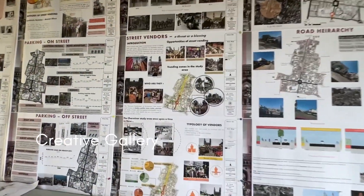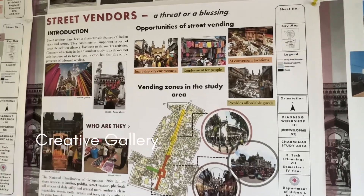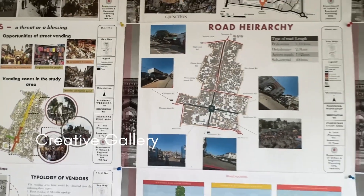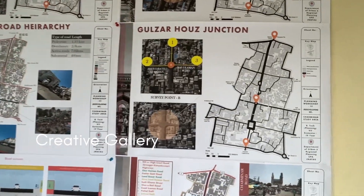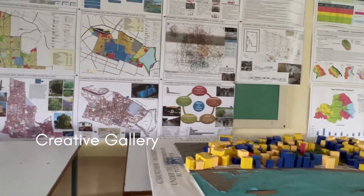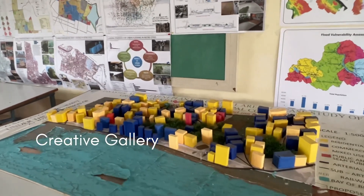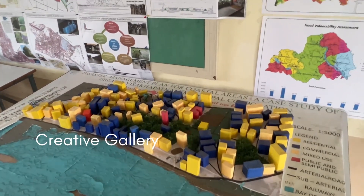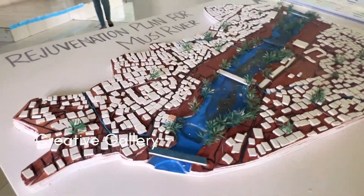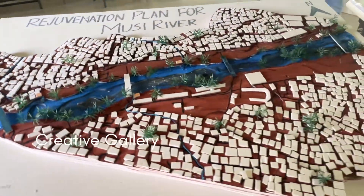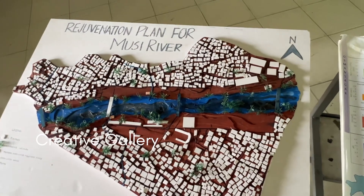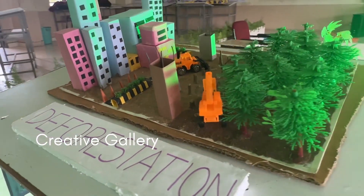We have seen some proposals from GHMC, NIUM, and national institutes. We have also studied the urban flooding issue, prepared an urban plan for disaster management, and seen a rejuvenation plan for the Musi River. The Musi River is significant for Hyderabad, and we have studied its present state, nearby destruction, and a deforestation plan for urban planning.